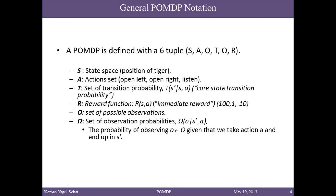Omega is the probability of observing O, given that we take action A and end up in state S prime. In the tiger problem, the state space is the position of the tiger. The action set is open left, open right, and listen. The cost of a wrong opening is $100, the cost of the listening action is $1, and the reward for a correct opening is $10.